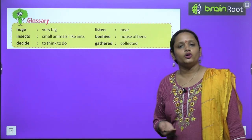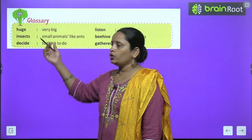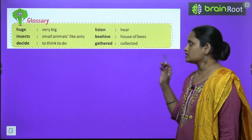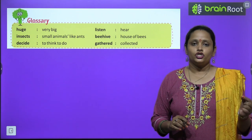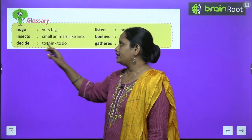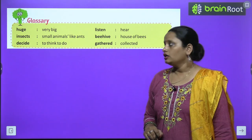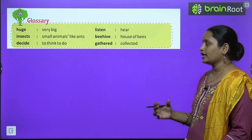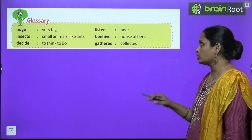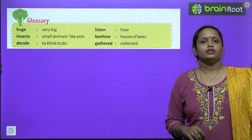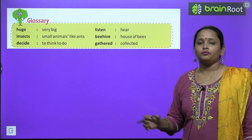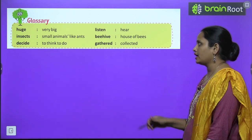Now children, let's move on to glossary. Huge means very big — बहुत बड़ा. Insect: small animals like ant — चींटियों जैसे छोटे-छोटे animals को हम insect बोलते हैं. Decide: to think to do — किसी चीज़ को करने का सोच लेना. Listen means सुनना. Beehive: house of bees — bees का घर. Gathered means collected — इकट्ठा करना.